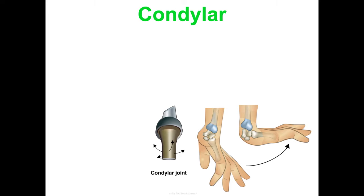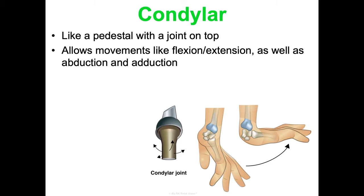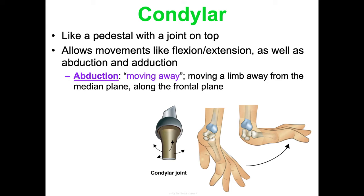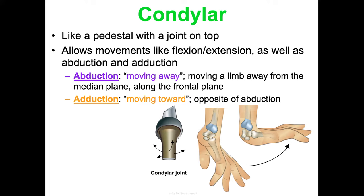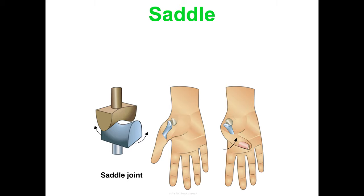The condylar joint — named as it appears in the Marieb textbook — is shaped like a pedestal with a joint on top. It allows flexion and extension, as well as abduction and adduction. Abduction is moving a limb away from the median plane along the frontal plane, like raising your arms out to the sides. Adduction is the opposite — bringing the arms back down. Condylar joints are found at the wrist.